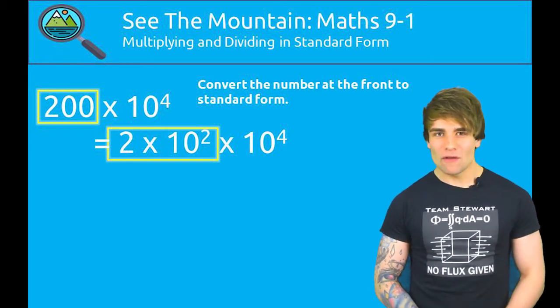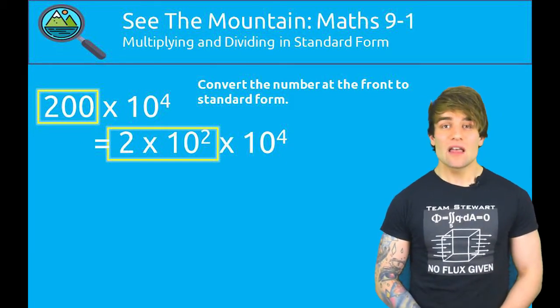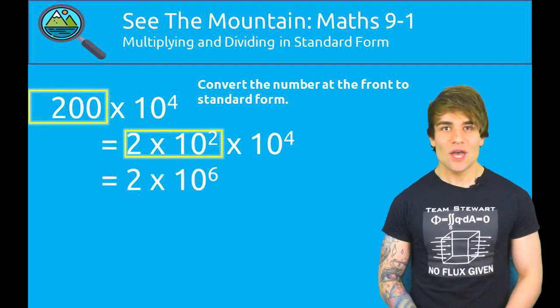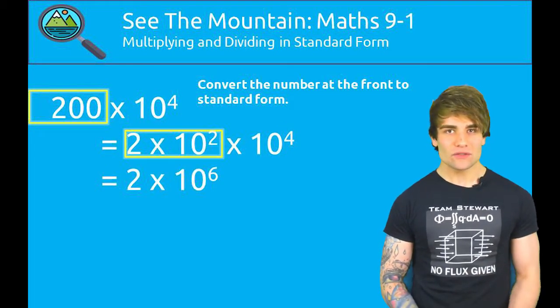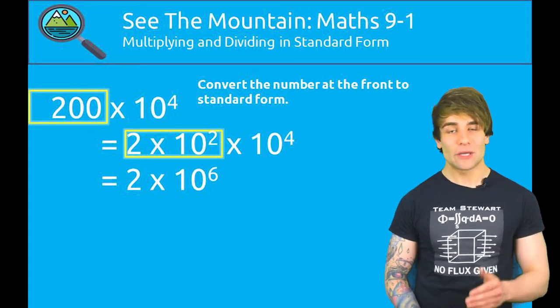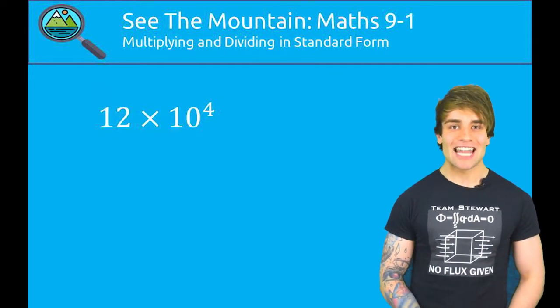Now, this is a law of indices, a posh name for telling us that we've now got to add the powers. Adding 2 and 4 gives us 2 times 10 to the 6. Now that's in standard form because we've got a number between 1 and 10.